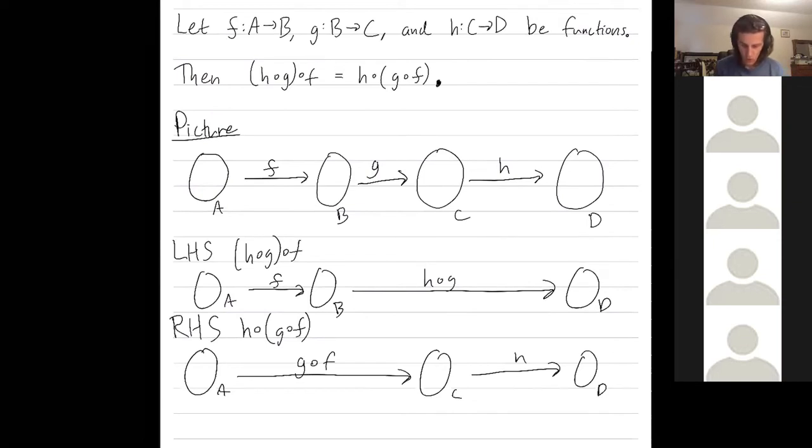So what this is saying is that if I compose these two maps to get a map from A to D, that's the same as composing these two maps to also get a map from A to D. Let's prove it.